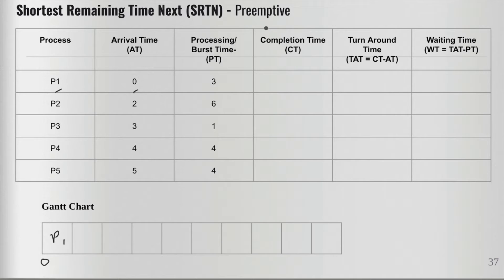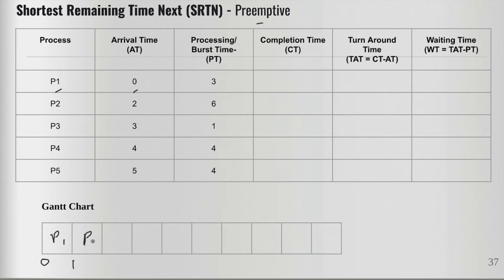The rule is that we check after every one unit of time in case another process has arrived with a shorter processing time than the one currently executing. If so, the current process moves back to the ready queue. We run P1 for one unit. At interval one, no other processes have arrived, so we run P1 for another one unit.